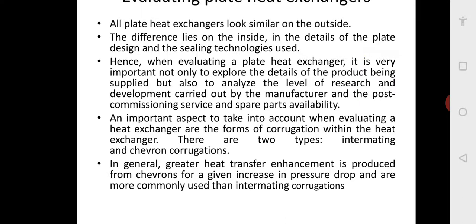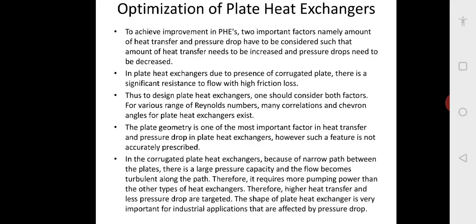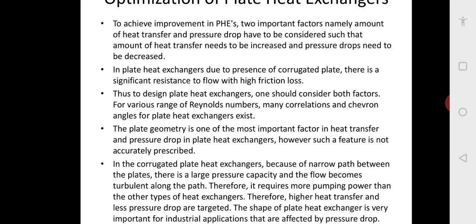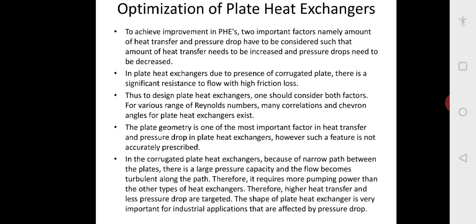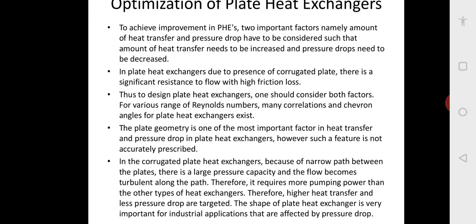There are two types of corrugations: intermitting and chevron corrugations. Greater heat transfer enhancement is produced by chevron corrugations for a given pressure drop, so they are more commonly used. Because the gap between plates is small, there is a pressure drop. To improve plate heat exchangers, two important factors must be considered: the amount of heat transfer needs to be increased and the pressure drop needs to be decreased. Due to corrugated plates, there is significant resistance to flow with high friction loss, so both factors must be considered in design.